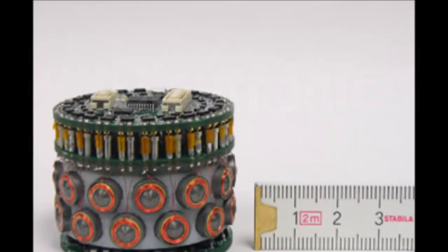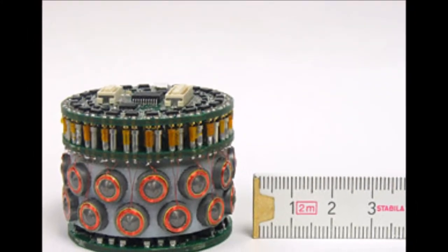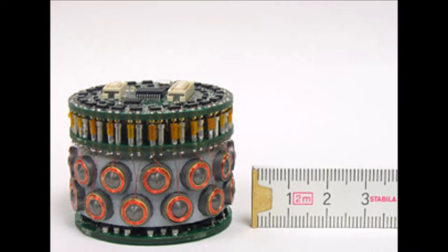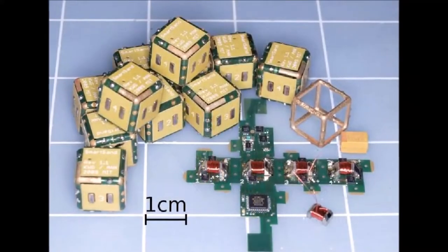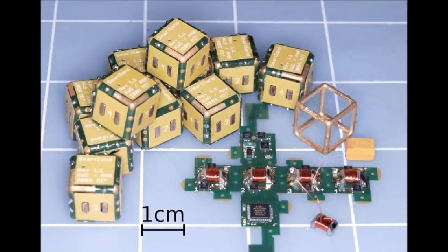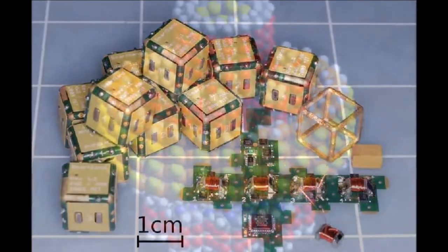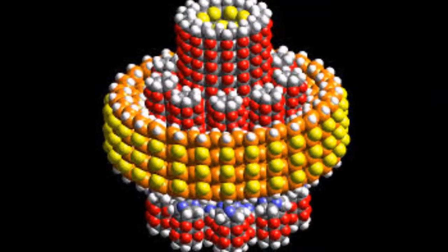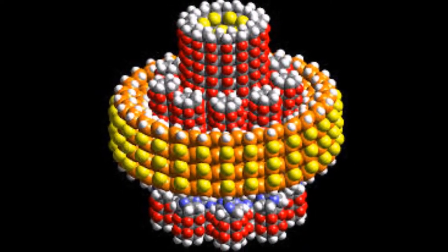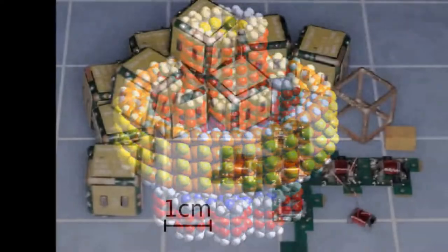Claytronics is an abstract future concept that combines nanoscale robotics and computer science to create individual nanometer-scale computers called claytronic atoms, or catoms, which can interact with each other to form tangible 3D objects that a user can interact with. This idea is more broadly referred to as programmable matter.